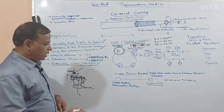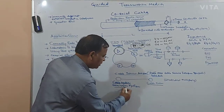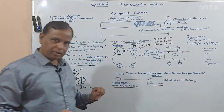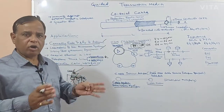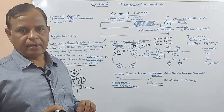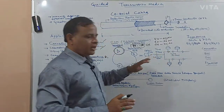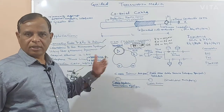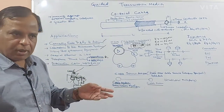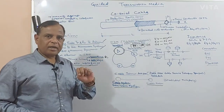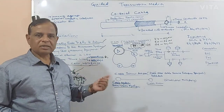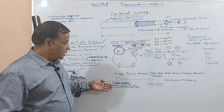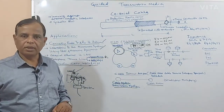At the service provider side you have the cable modem termination system which communicates with the cable modem to provide internet service. The coaxial medium is now carrying two services. Comparing with the twisted pair cable — it was also carrying two services: voice and data. Here also it is carrying two services. That's how cable internet access became popular.